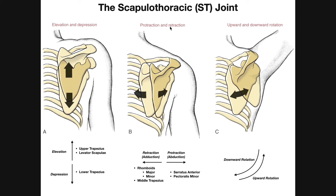We also have protraction and retraction of the scapula. Movement away from the midline is protraction; movement toward the midline is retraction, also called scapular adduction, while protraction is called scapular abduction. Protraction is facilitated by serratus anterior and pectoralis minor, but mostly serratus anterior. Retraction is done via the middle trapezius and both rhomboid muscles — rhomboid major, which is the larger inferior one, and rhomboid minor, the smaller superior one.